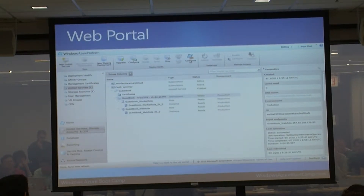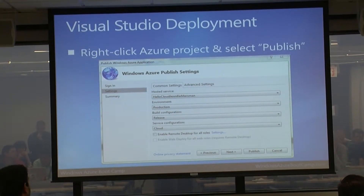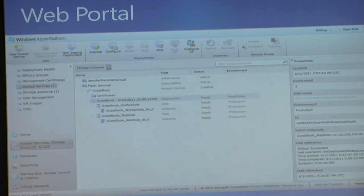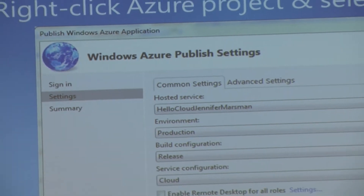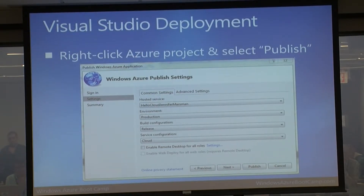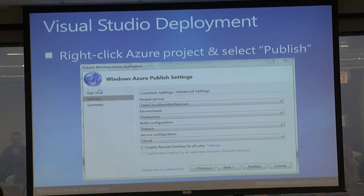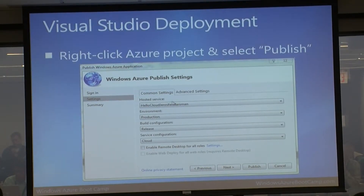The functionality in Visual Studio is a subset of what you can do through the portal - anything can be done through the portal. For Visual Studio deployment, you'd click New Staging Deployment in the web portal, and a wizard walks you through pointing to those two files: the package and the configuration file. In Visual Studio, right-click the cloud project, select Publish, and a wizard pops up with three steps.